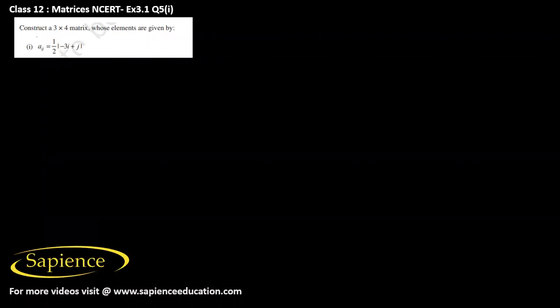Here we have to construct a 3×4 matrix whose elements aij are given as aij equals half of mod of minus 3i plus j.